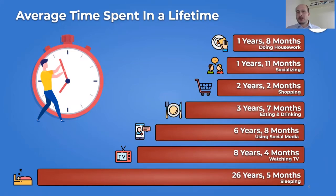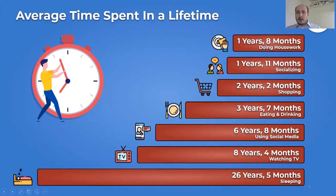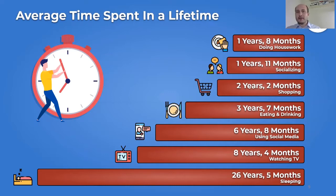Average time spent in a lifetime is another interesting measure. An average person spends one year and eight months doing housework, around two years socializing, more than two years shopping, three years and seven months eating and drinking, six years and eight months using social media, more than eight years watching TV, and more than 26 years sleeping. The time spent using social media is coming closer to the time spent watching TV, and in a few years we're likely to spend much more time on social media.